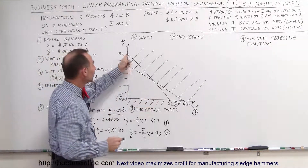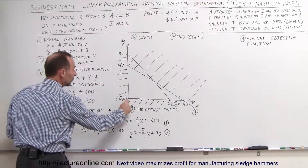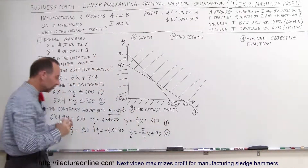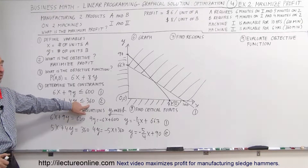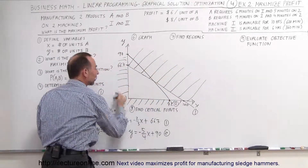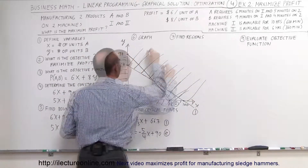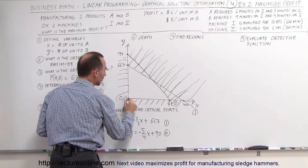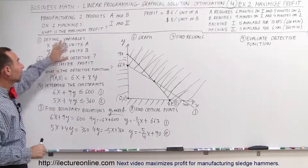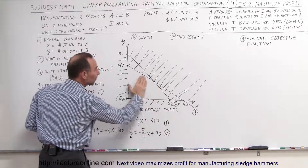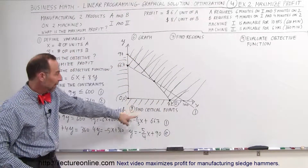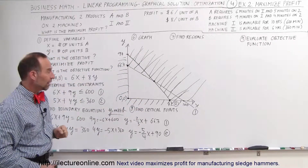The only surviving region has four critical points: (0, 0), (0, 66.7), (72, 0), and the intersection of the two lines. Because of the constraints, we are forced to operate somewhere within this region. The maximum and minimum profit will be found at those critical points. We now have to find those critical points to determine the maximum profit by evaluating the objective function.